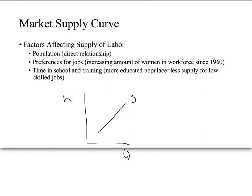For example, there's been an increasing amount of women in the workforce since 1960, which would increase the supply of jobs. And also, if we look back farther, there are fewer workers than before because we've excluded children from the market for the most part. And time in school or training — a more educated populace — means less supply of labor for lower skilled jobs.